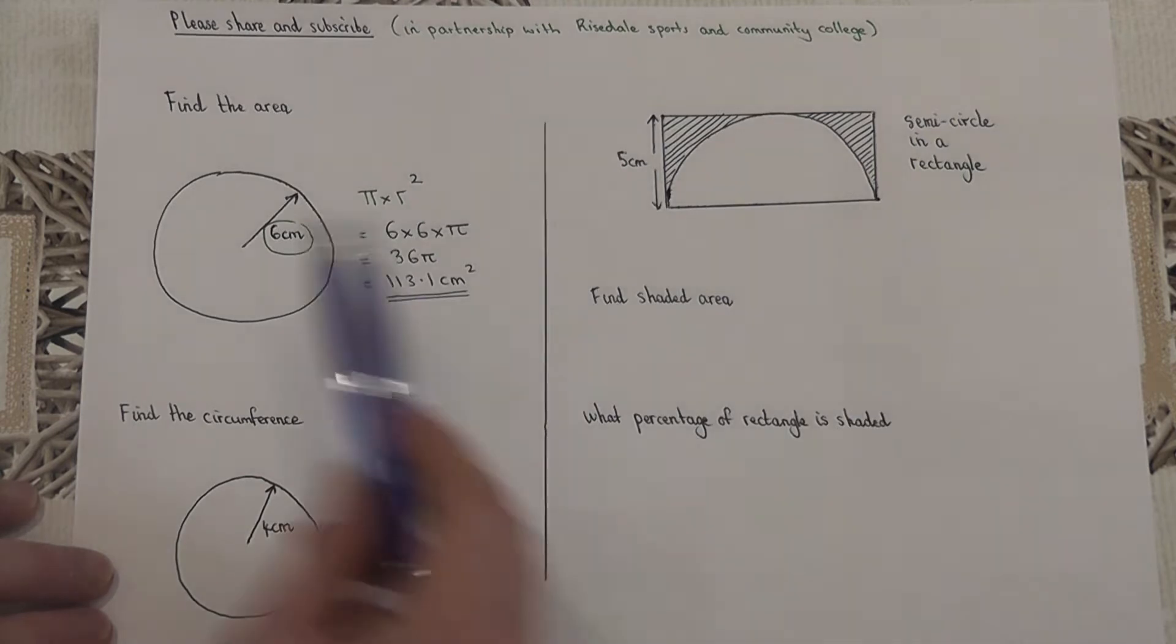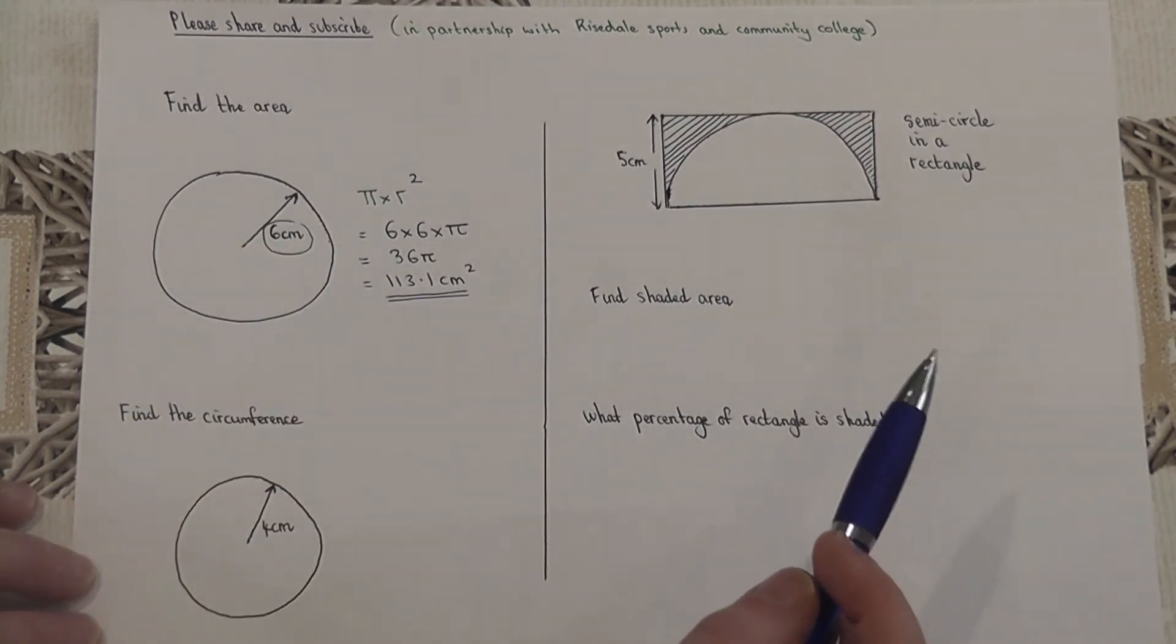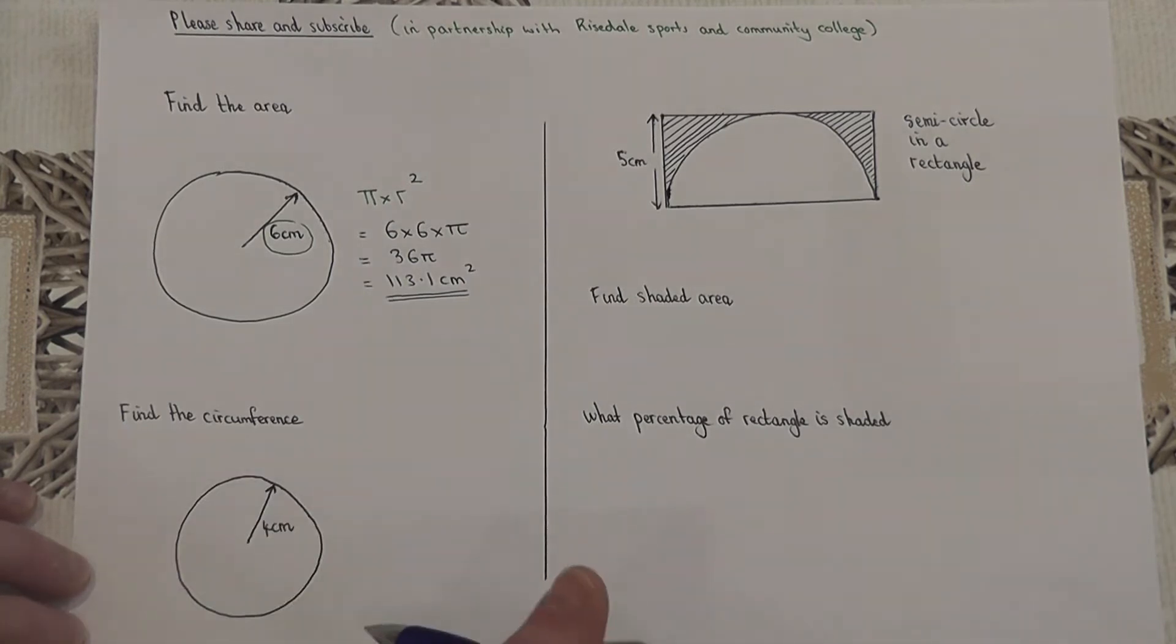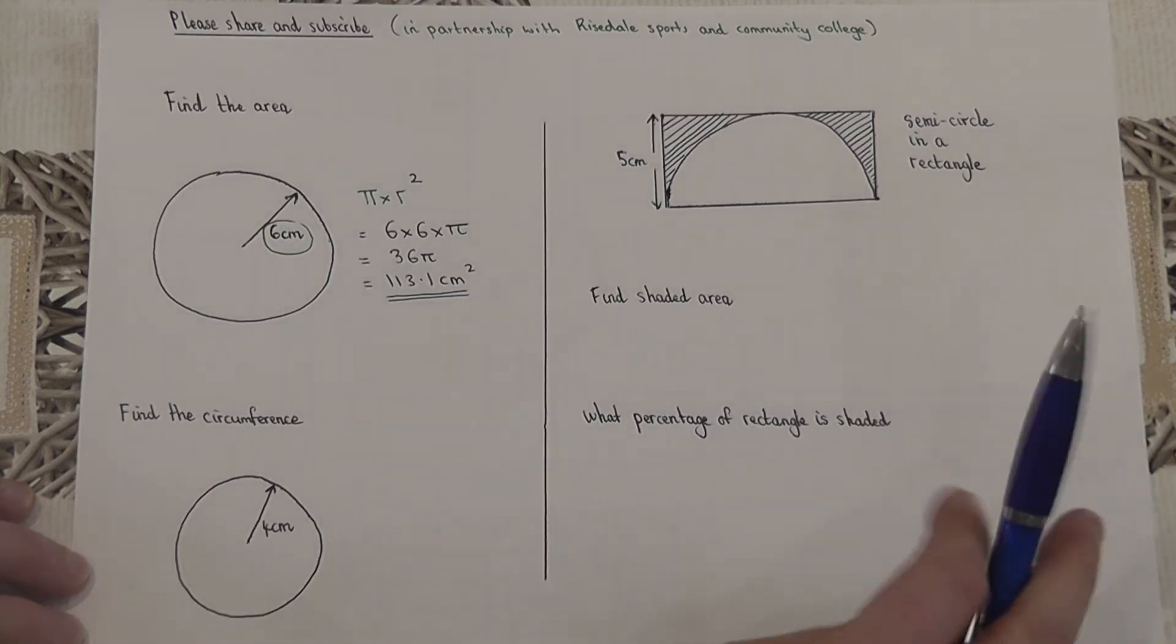So this circle has an area of 113.1 centimeters squared, or 36π, and that's called in terms of pi. The area is basically how much we need to cover the entire circle. However, sometimes you're asked for the circumference, which is the distance around the outside of the circle.